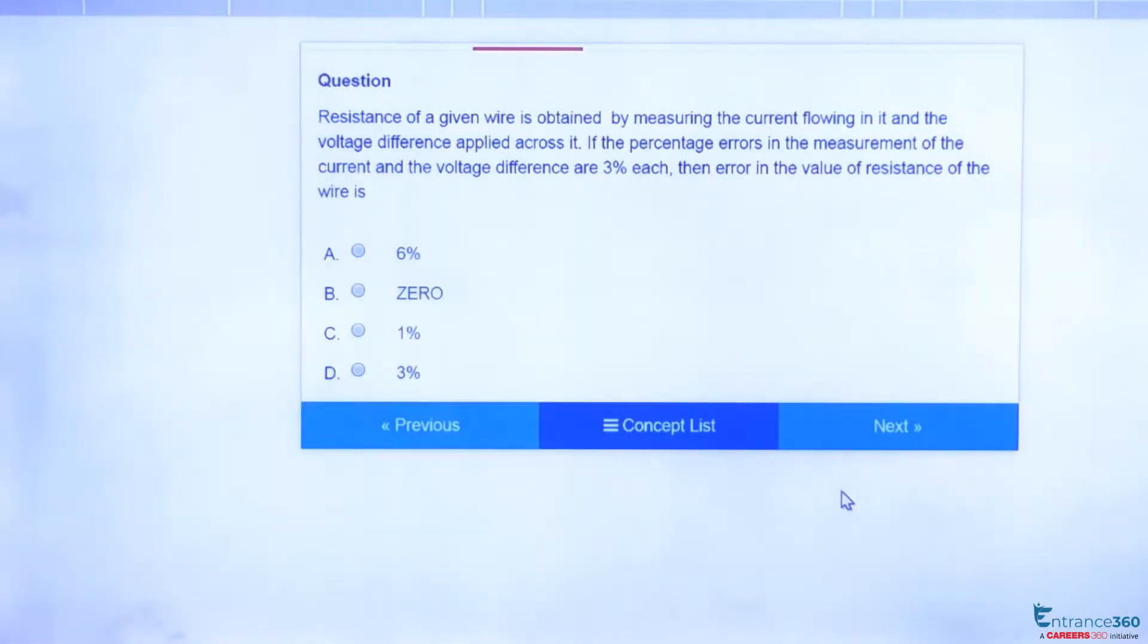Hello students, this is a direct and simple question asked in JEE Main from the chapter Current Electricity. Resistance of a wire is obtained by measuring the current and voltage difference applied across it. A percentage error in measurement of current and voltage is given as 3%.